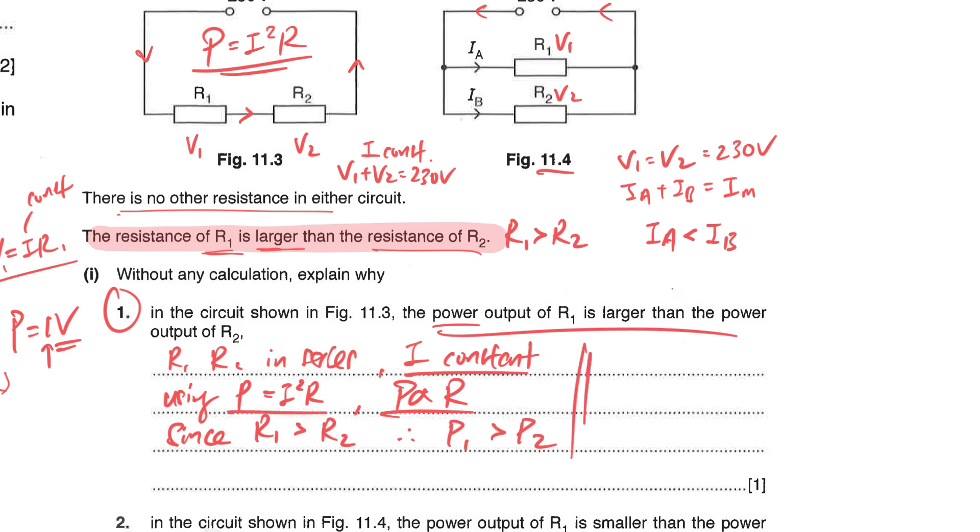Another thing that I want to highlight is sometimes the question may ask you about the energy. So why the energy of R1 is greater than the energy of the resistance R2. If that's the case you can still just make use of this because the relationship is actually energy equals to power times time. In other words, power equals to I squared R times T, and you can assume per unit time that means one second. So basically you can just focus on power will do even though they ask for energy, it's the same.